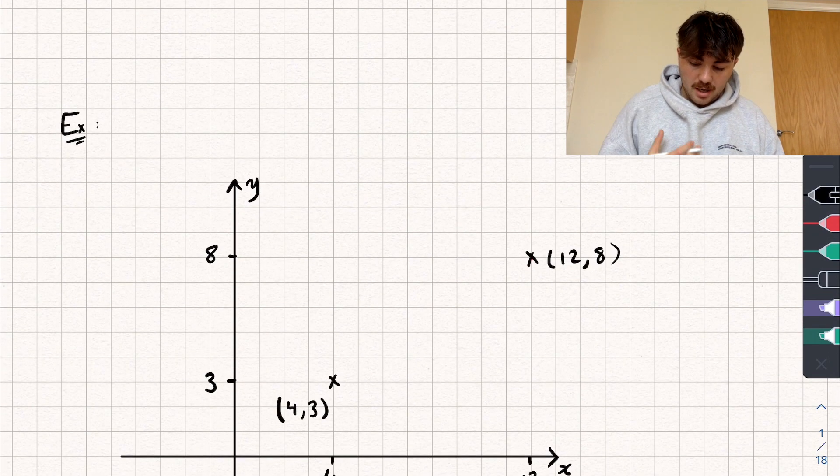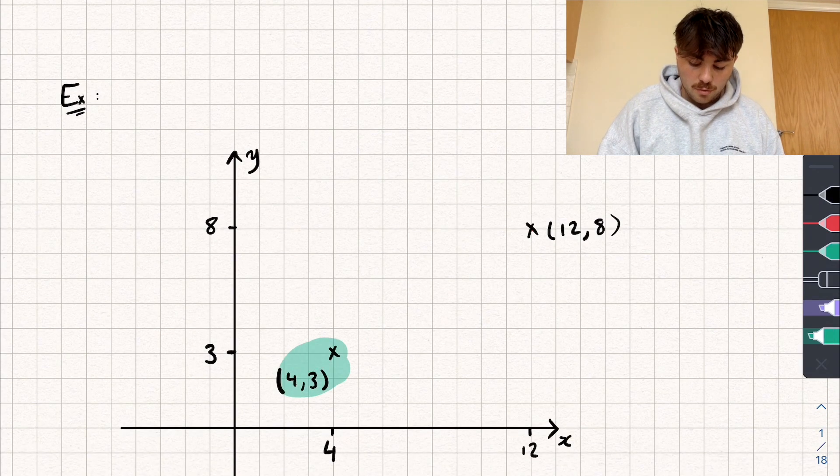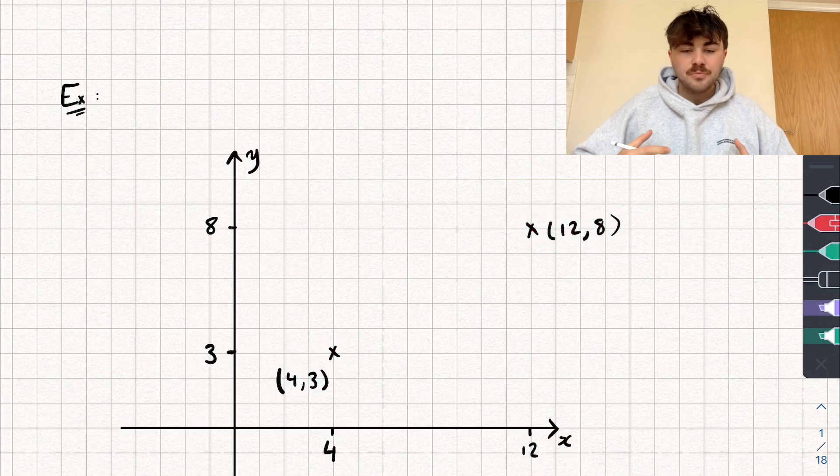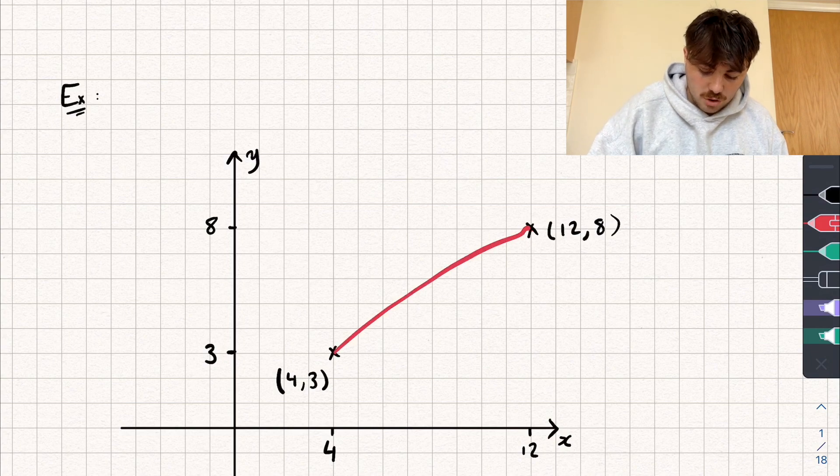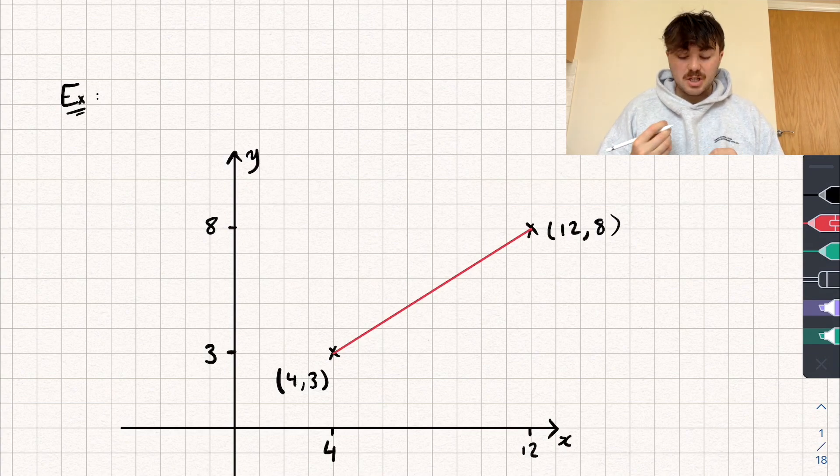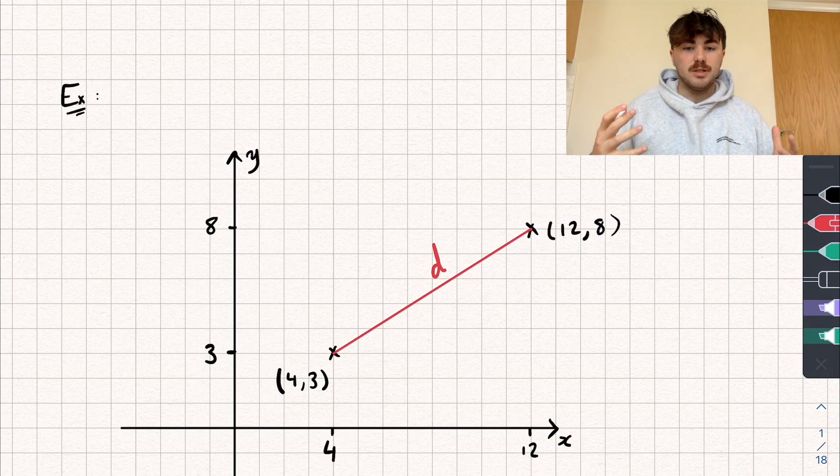So let's start off by looking at an example. Here we have two points, one given by the coordinates 4, 3, and the other point given by the coordinates 12, 8. We want to find the distance between them. So by that I just mean if I was to draw a line directly connecting the two, how long is that line? At the minute I don't know, so I'm just going to give it some distance and I'll call it D, and we're going to try and work out what D is equal to.